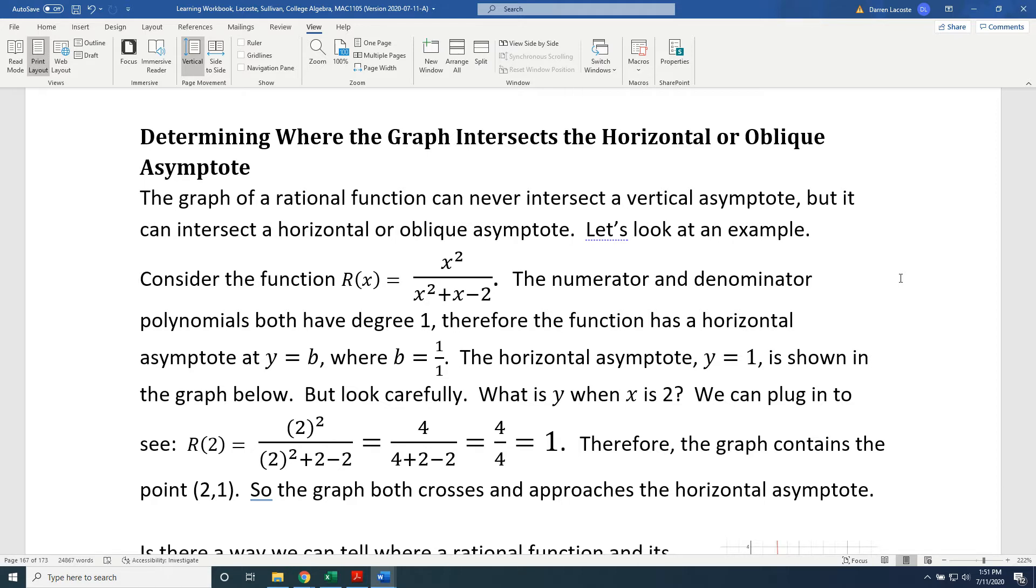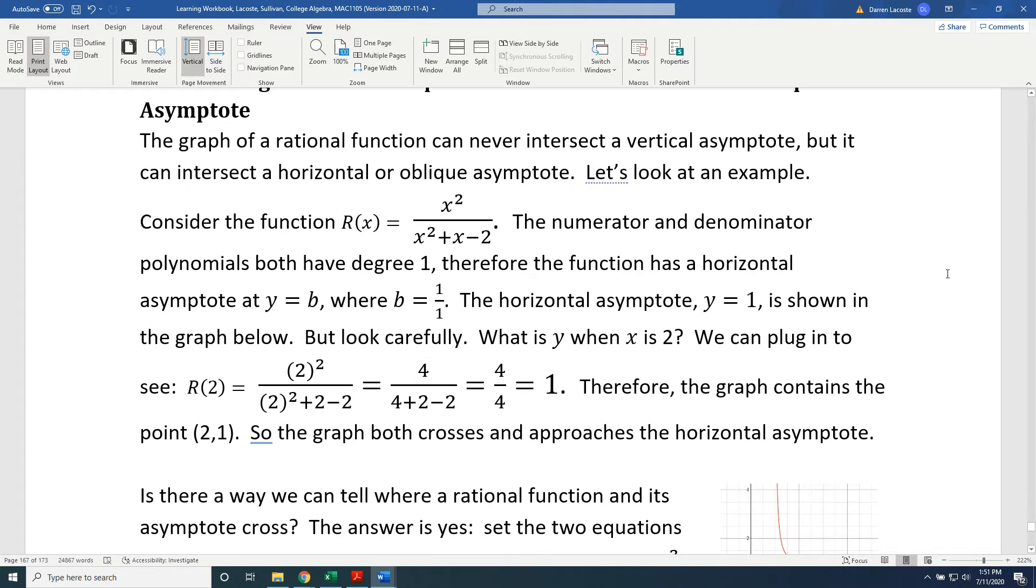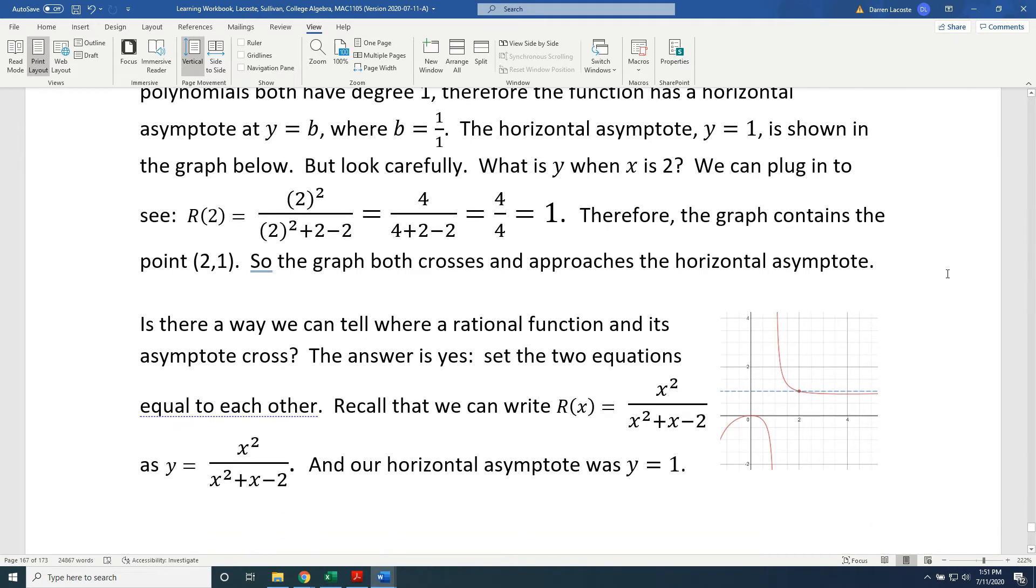Consider the function R(x) = x² / (x² + x - 2). The numerator and denominator polynomials both have degree 1. Therefore, the function has a horizontal asymptote at y = b, where b equals the ratio of the highest degree term coefficients, 1 divided by 1. The horizontal asymptote, y = 1, is shown in the graph below.